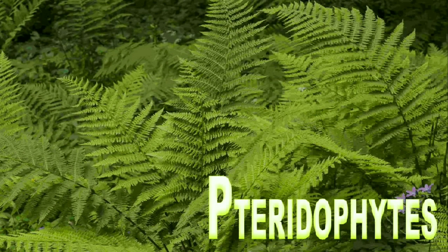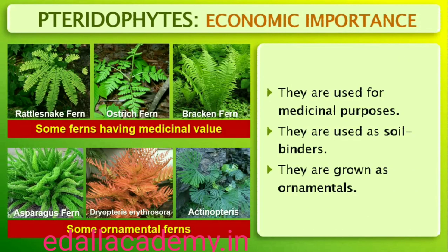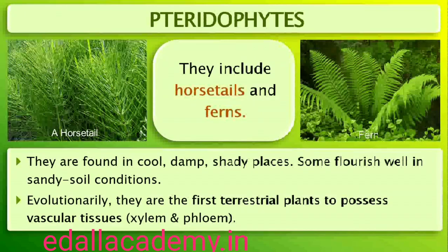Pteridophytes include horsetails and ferns. They are used for medicinal purposes and as soil binders, and are also frequently grown as ornamentals. Evolutionarily, they are the first terrestrial plants to possess vascular tissues — xylem and phloem. The pteridophytes are found in cool, damp, shady places, though some may flourish well in sandy soil conditions.